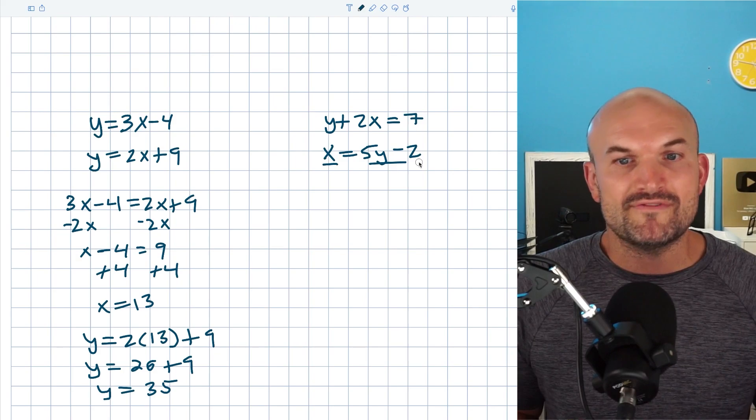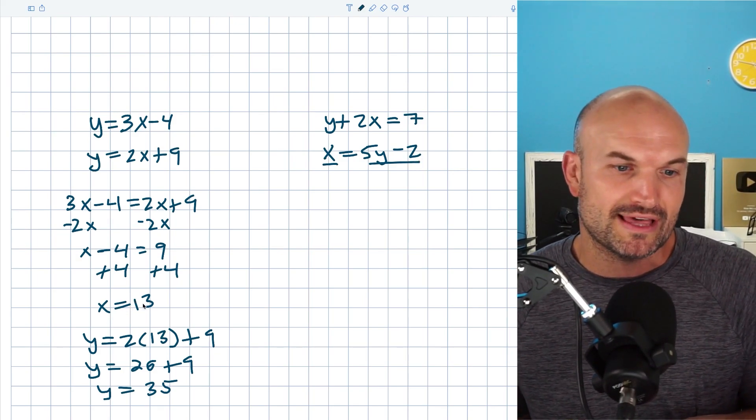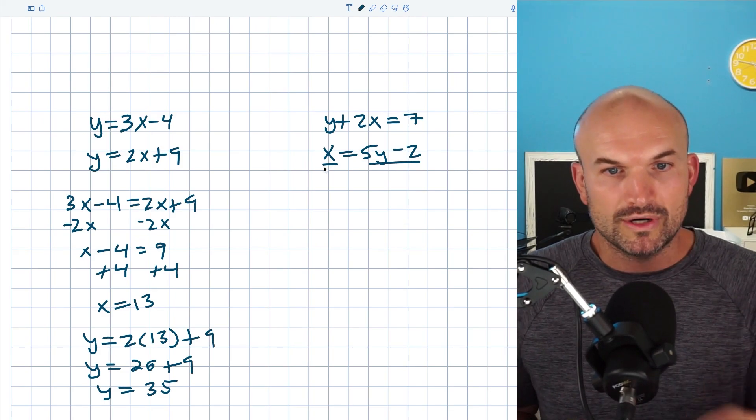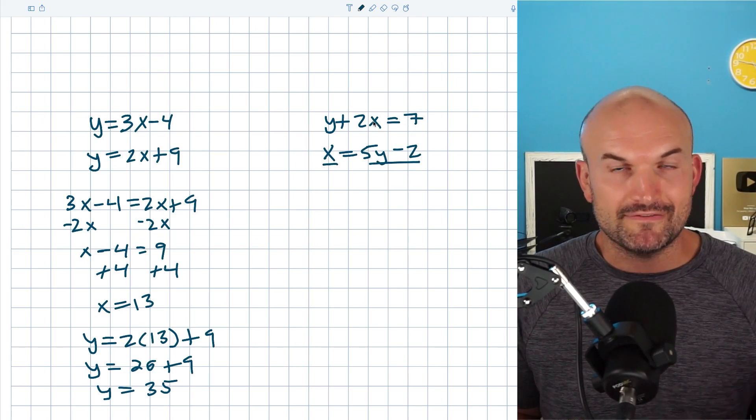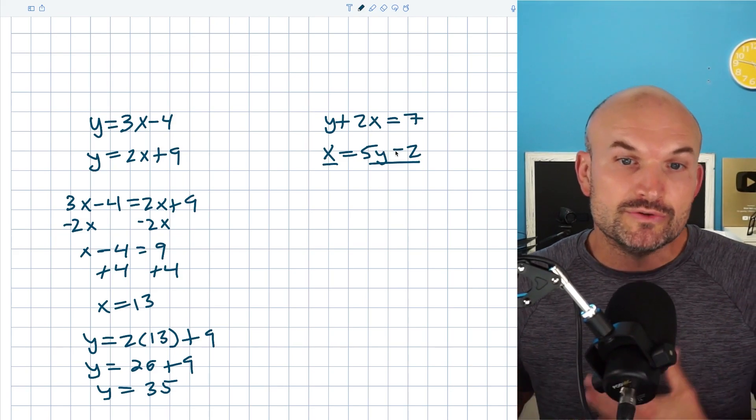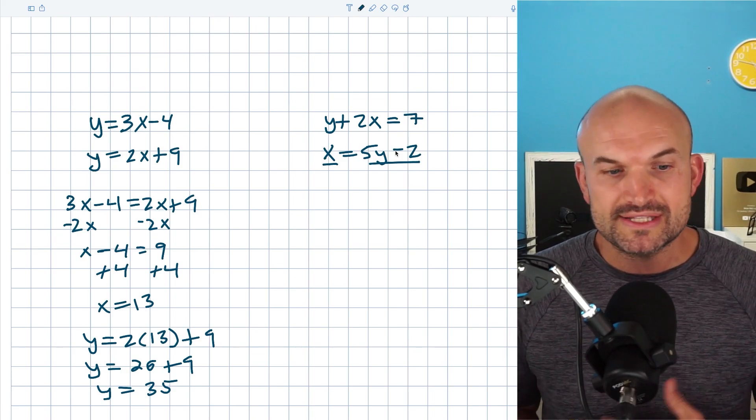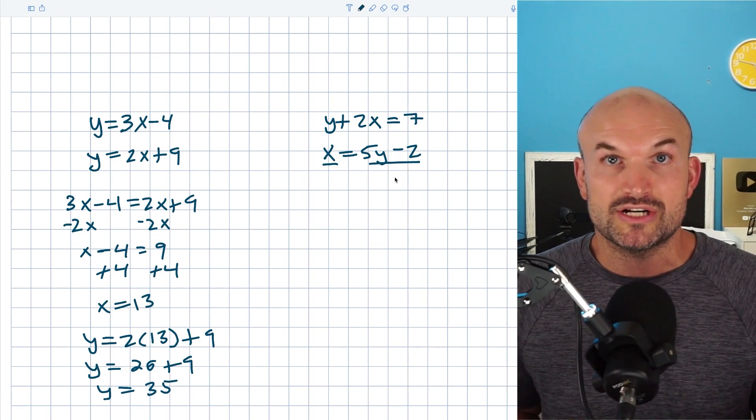So in this case, we have x is equal to 5y minus 2, right? Now, remember in this last example, x was equal to 13. What did we do with that 13? We replaced it with an x. Well, here my x is equal to 5y minus 2. So in my top equation, I have a variable x. I can replace that with 5y minus 2. Just make sure when you do plug it in that you're going ahead and using parentheses. I did that when I had a number and you're going to want to do the same thing with an expression.